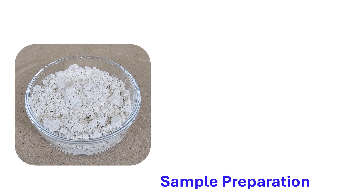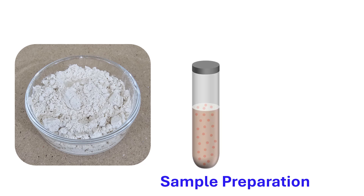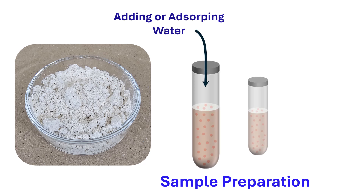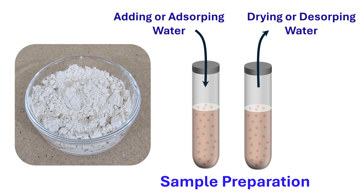Consider a food powder as shown. We need to prepare samples at different moisture levels since the state diagram represents the characteristics of phases as a function of moisture. We could prepare samples with different levels of moisture and temperature by adding water or by drying or removing water from the sample. First, we could predetermine the water that needs to be added or removed to attain a specific moisture before adding or removing moisture.